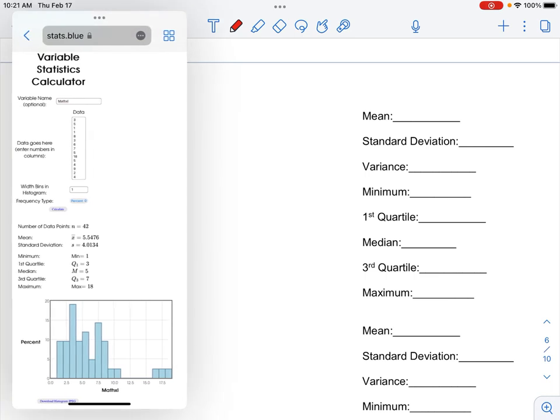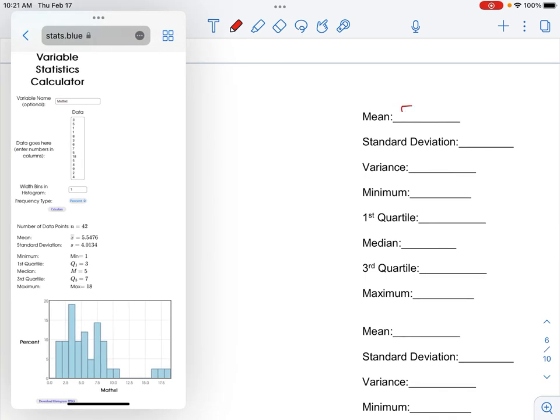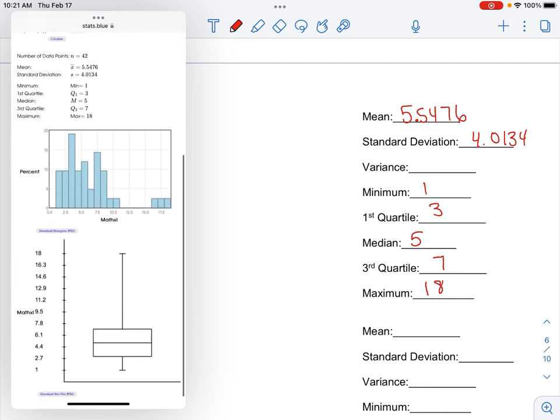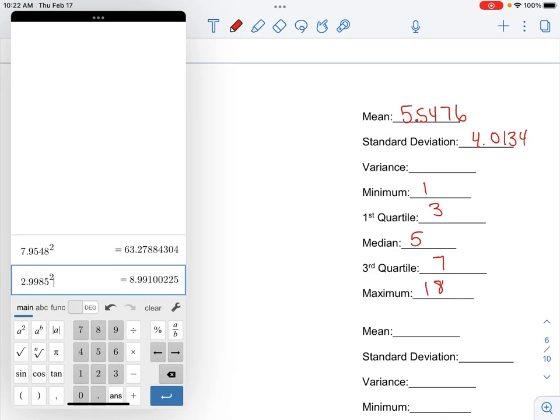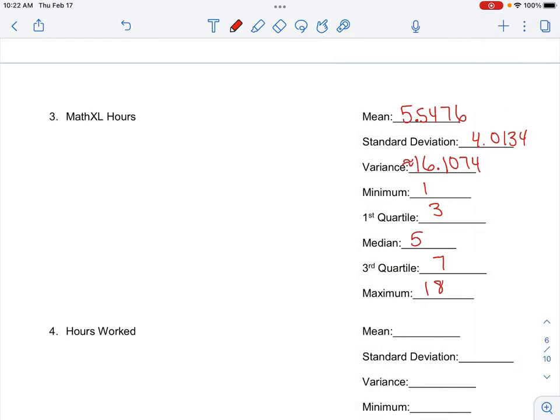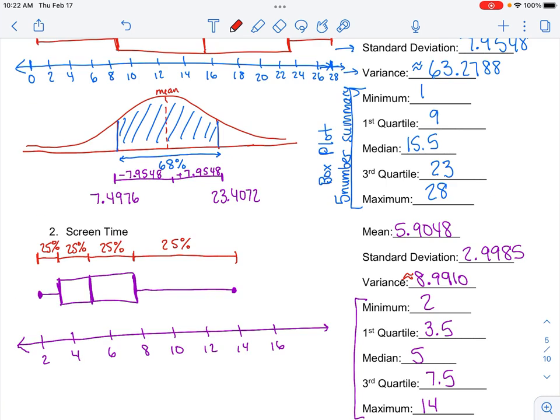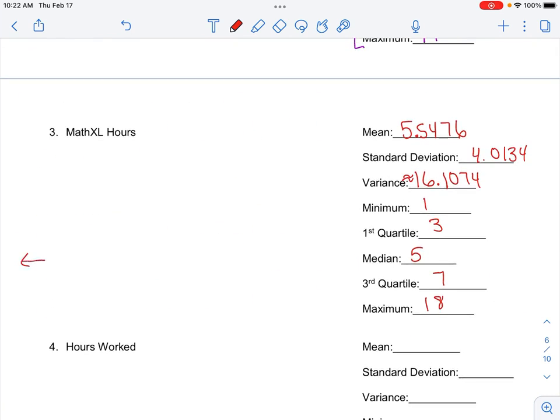So I have 42 data points again. This is my math Excel hours. I'm going to fill it in. You'll notice once again, based on the boxplot they have on stats.blue, that this is a pretty skewed data set. Our variance when we solve is about 16.074. And then I'm going to create my boxplot.